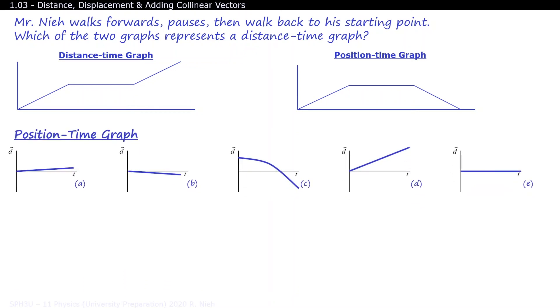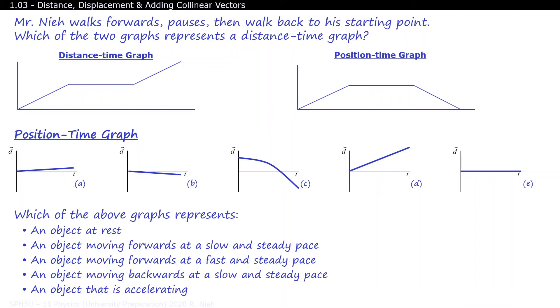Here are some random position time graphs. And I want you to match each graph with the following statements. You can pause the video and write your answers down. Are you ready for the answers? E represents an object at rest. Even though A and D look similar, a line with a shallower slope would represent an object that is moving slowly. And a steeper slope would represent an object that is moving quickly.